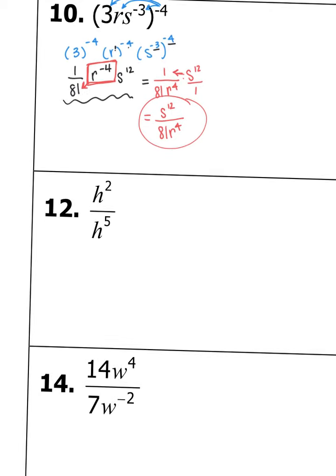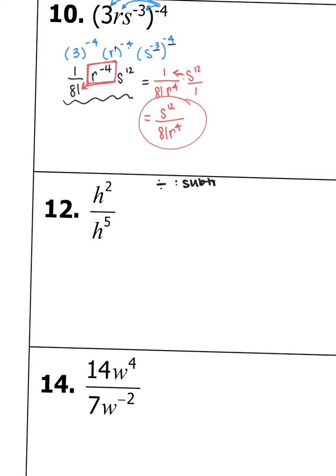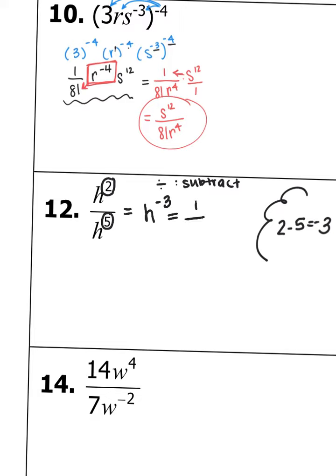We have h to the second power all over h to the fifth power, so we're dividing. When we divide, we subtract our exponents: 2 minus 5 is negative 3, so this is h to the negative third power. We just have to rewrite it to make sure we do not have a negative exponent. We'll have 1 over h to the positive 3 — just put it in a denominator and it becomes positive.